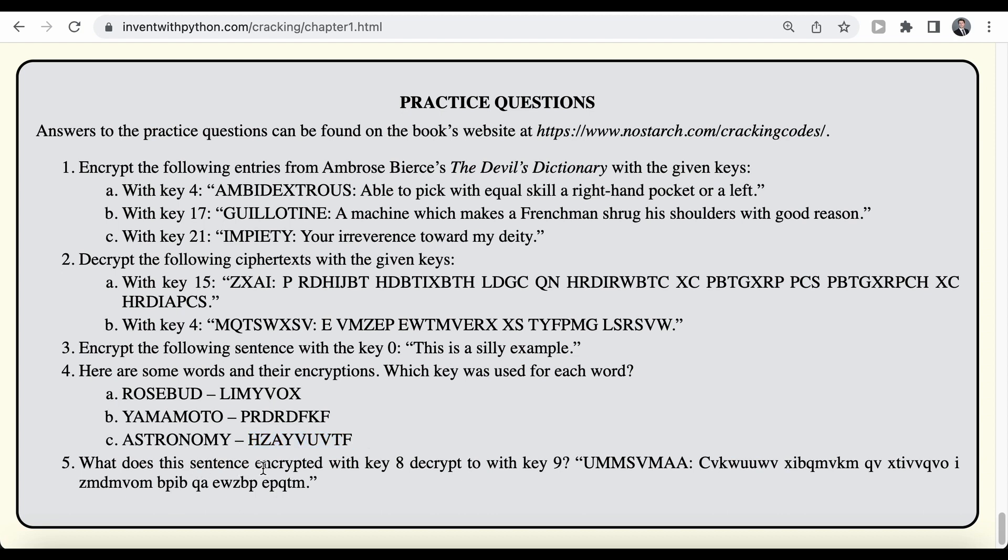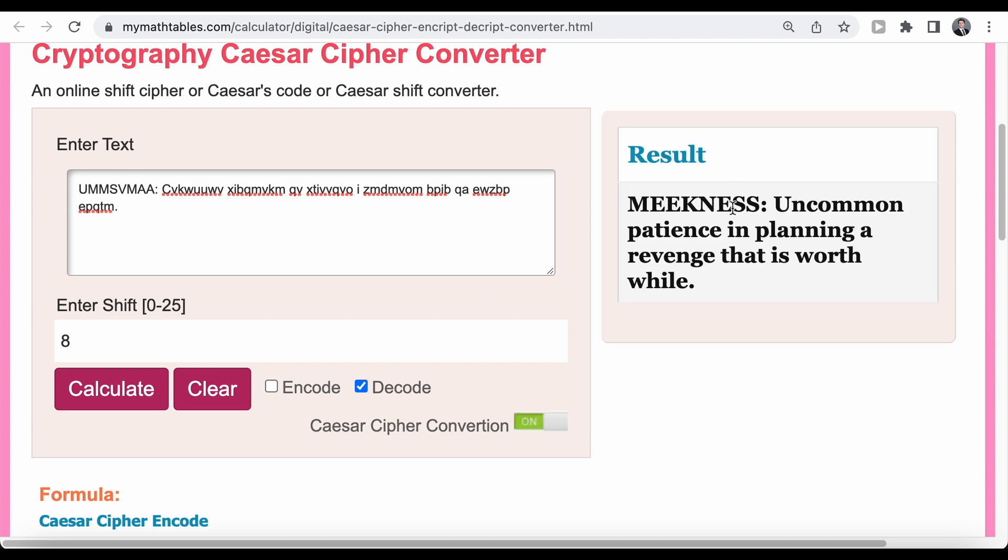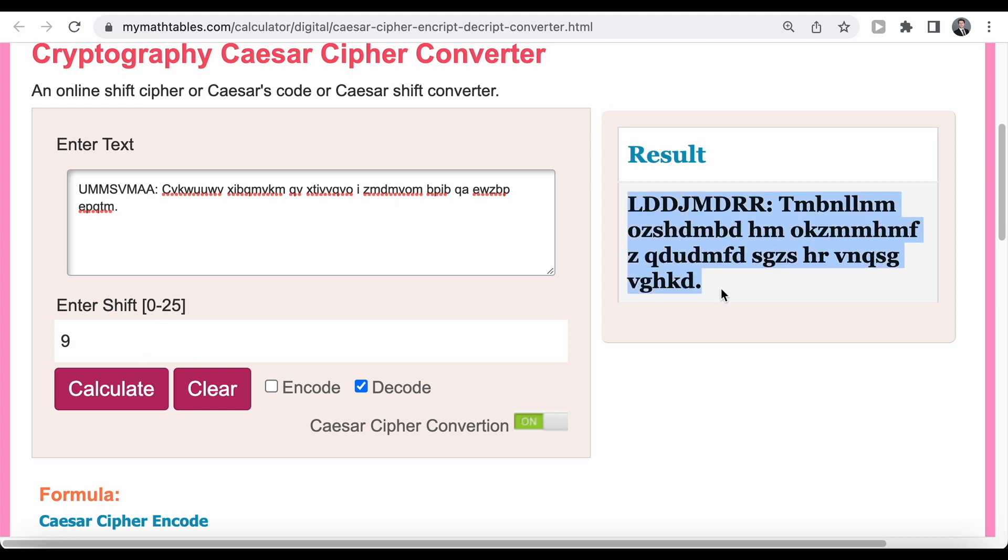Now for the final question, we have a sentence that has been encrypted with key 8. And it looks like this. And the question is, what is actually the result if we try to decrypt it with the wrong key, so in this case with a key of 9 instead of 8. And just to double check, here is the encrypted cipher text. And let's just decode it with the correct key, so with a key of 8. So here we can see this is the proper result. Meekness, uncommon patience in planning a revenge that's worthwhile. But now the actual question is to decode it with a key of 9 rather than 8. And if we do that, so if we change the key to 9 rather than 8, and we click on decode, then we get this result here. So if we try to decode a message with the wrong key, then of course we get back gibberish. We need to know the correct key to decrypt the message.